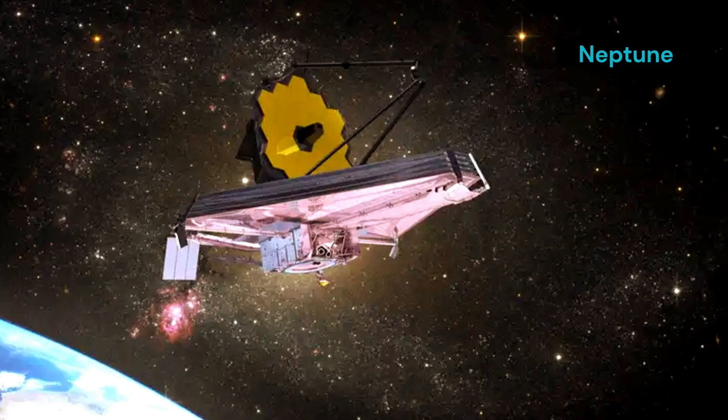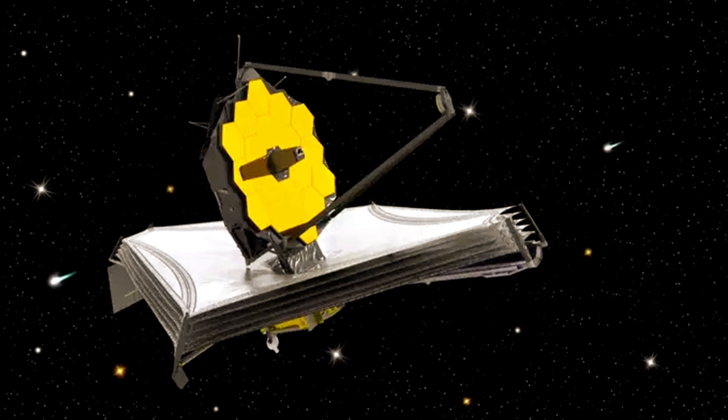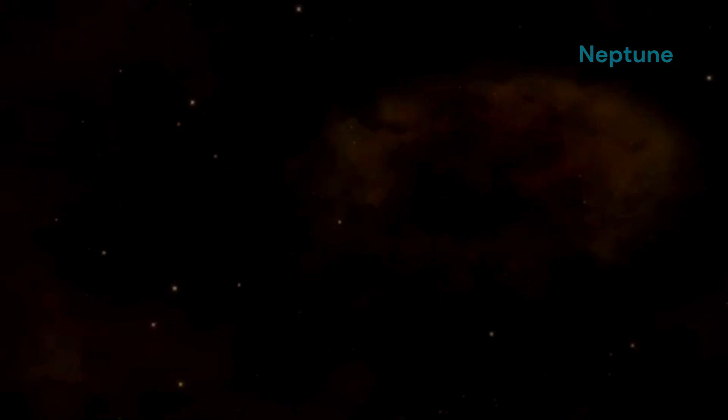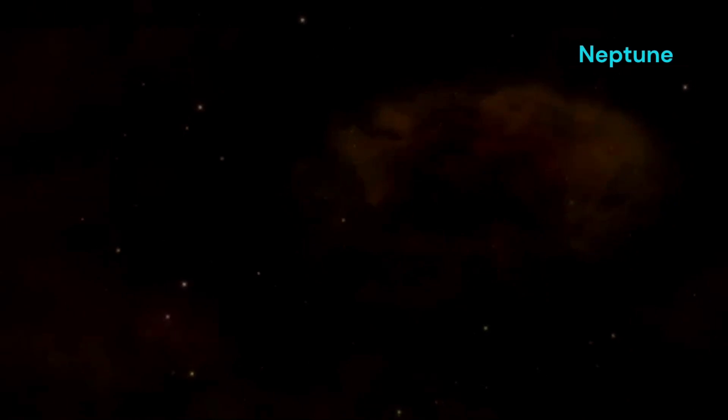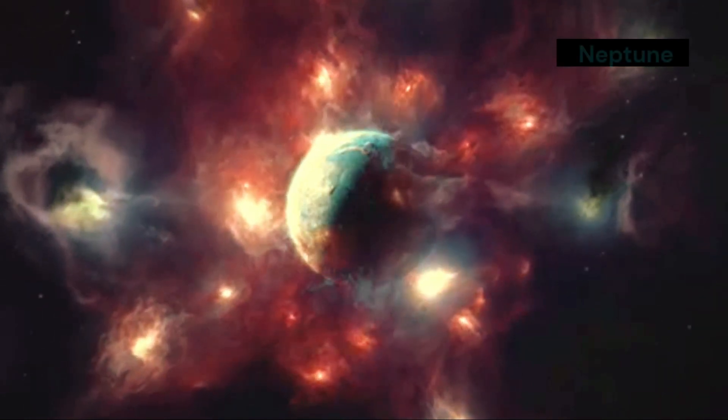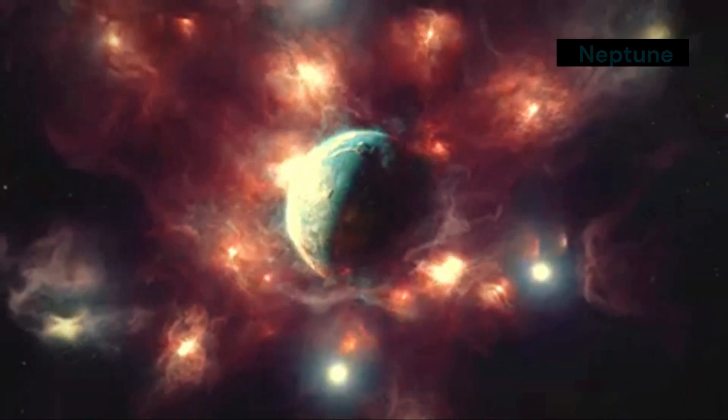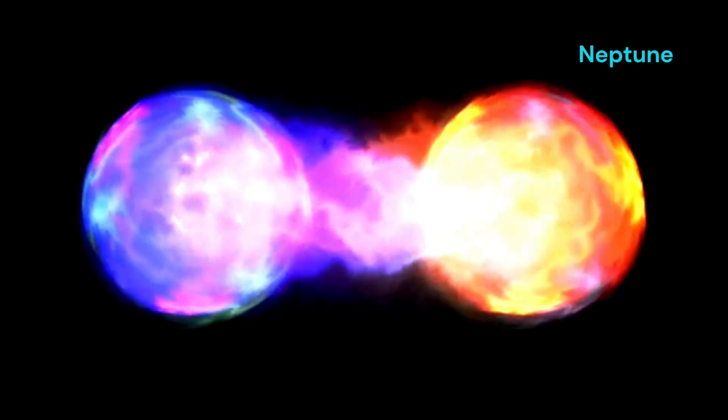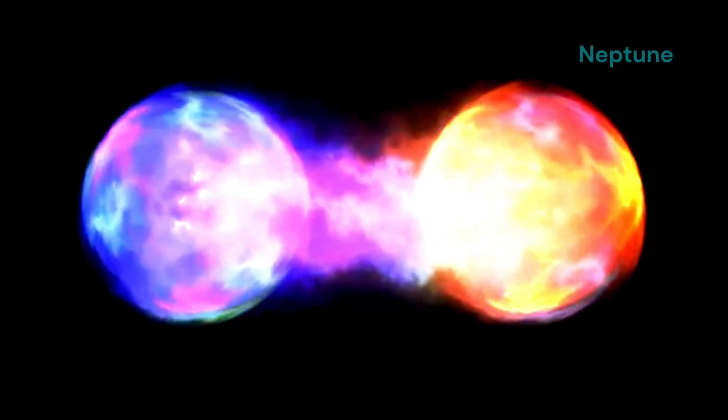The JWST is the most powerful space telescope ever built. It is designed to observe the universe in infrared light. Infrared light is invisible to the human eye, but it can penetrate through gas and dust, giving us a clearer view of the cosmos. The JWST has already made groundbreaking discoveries. It has observed the most distant galaxies ever seen. It has studied the atmospheres of exoplanets, planets orbiting other stars, and now it has given us a front row seat to a planetary collision in our own solar system. This event not only deepens our knowledge of Neptune's atmosphere, but also hints at the dynamic behavior of distant objects from the Kuiper belt. Could this be part of a larger pattern of outer solar system activity?